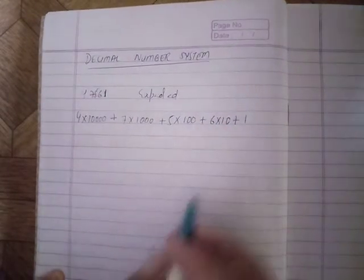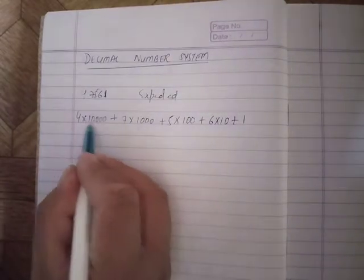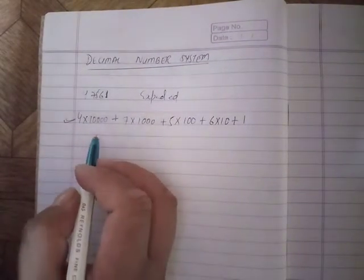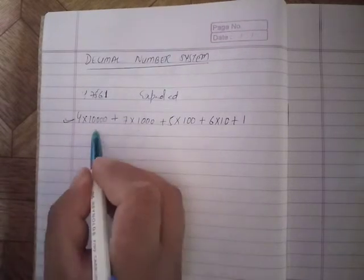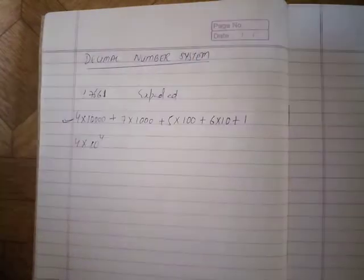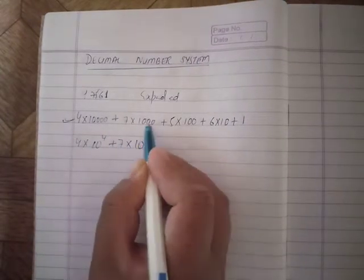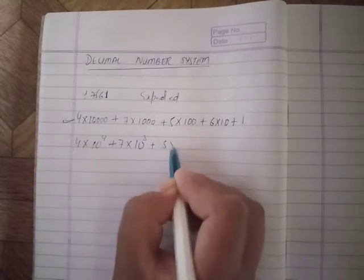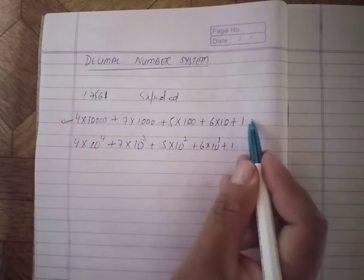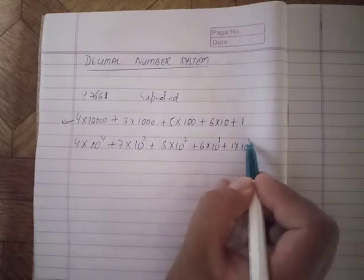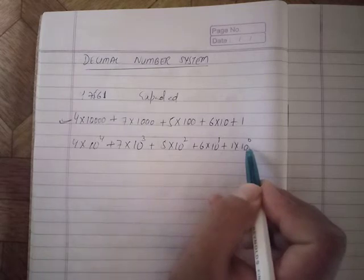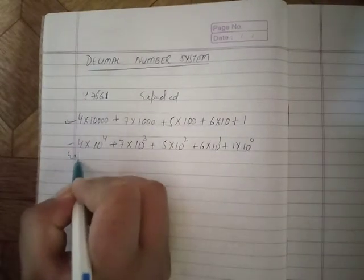Plus 6 into 10, plus 1. This is the expanded form. You can write it in exponential form using powers: 4 into 10 to the power 4, plus 7 into 10 to the power 3, plus 5 into 10 squared, plus 6 into 10 to the power 1, plus 1 into 10 to the power 0. Anything to the power 0 is 1.